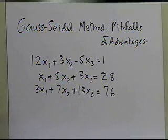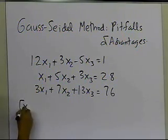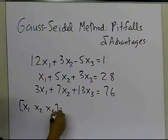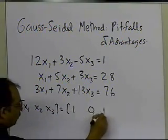and then we had 3x1 + 7x2 + 13x3 = 76. So we're given three simultaneous linear equations here, where we want to find x1, x2, and x3, and we started with our initial guess of x1, x2, and x3 equal to 1, 0, 1,